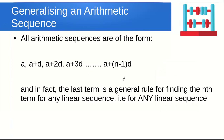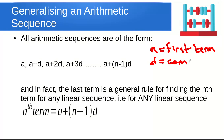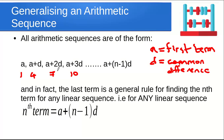Generalizing an arithmetic sequence: all arithmetic sequences take the form a, a+d, a+2d, a+3d, where a stands for the first term and d stands for the common difference. You can see this with the sequence 1, 4, 7, 10, 13 — the first term a is 1 and the common difference is 3, so the next term is 1+3, then 1+2×3, then 1+3×3. The general nth term is therefore a plus (n−1)d.